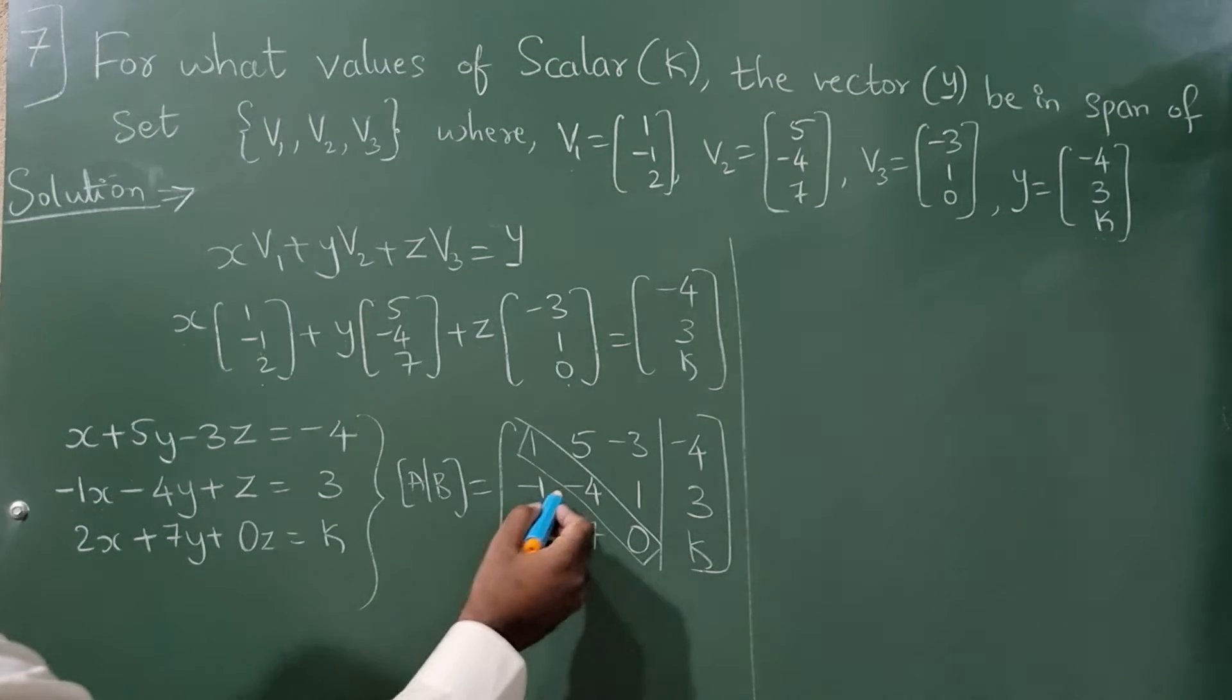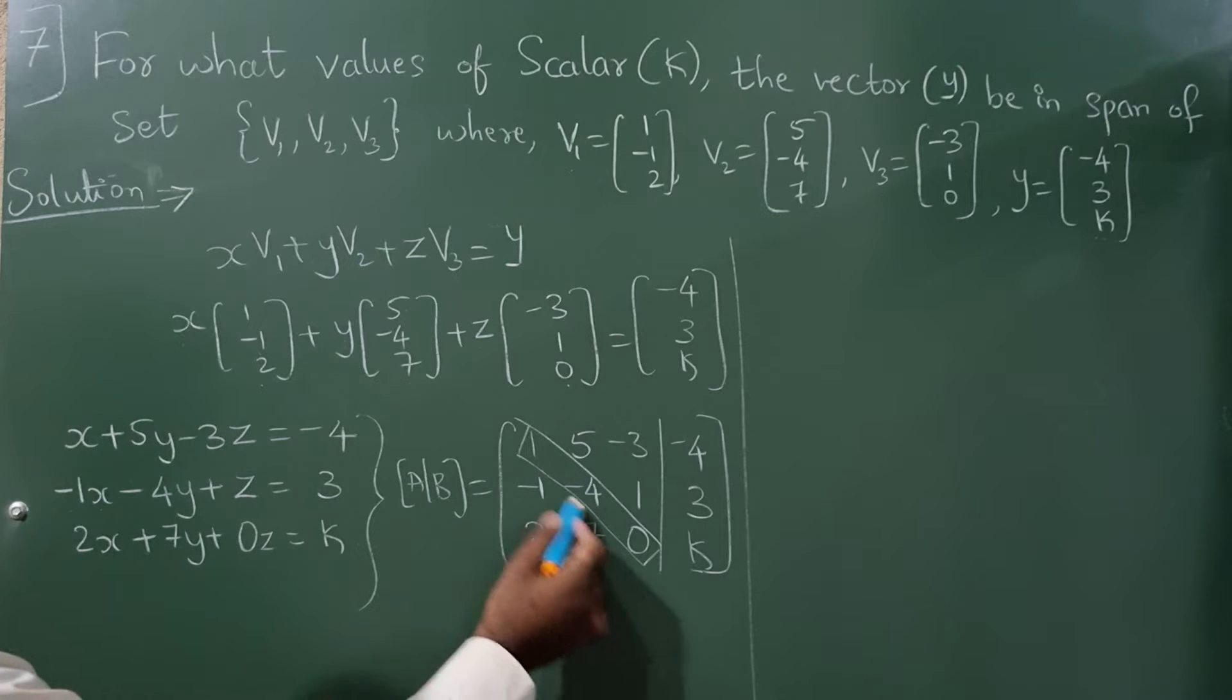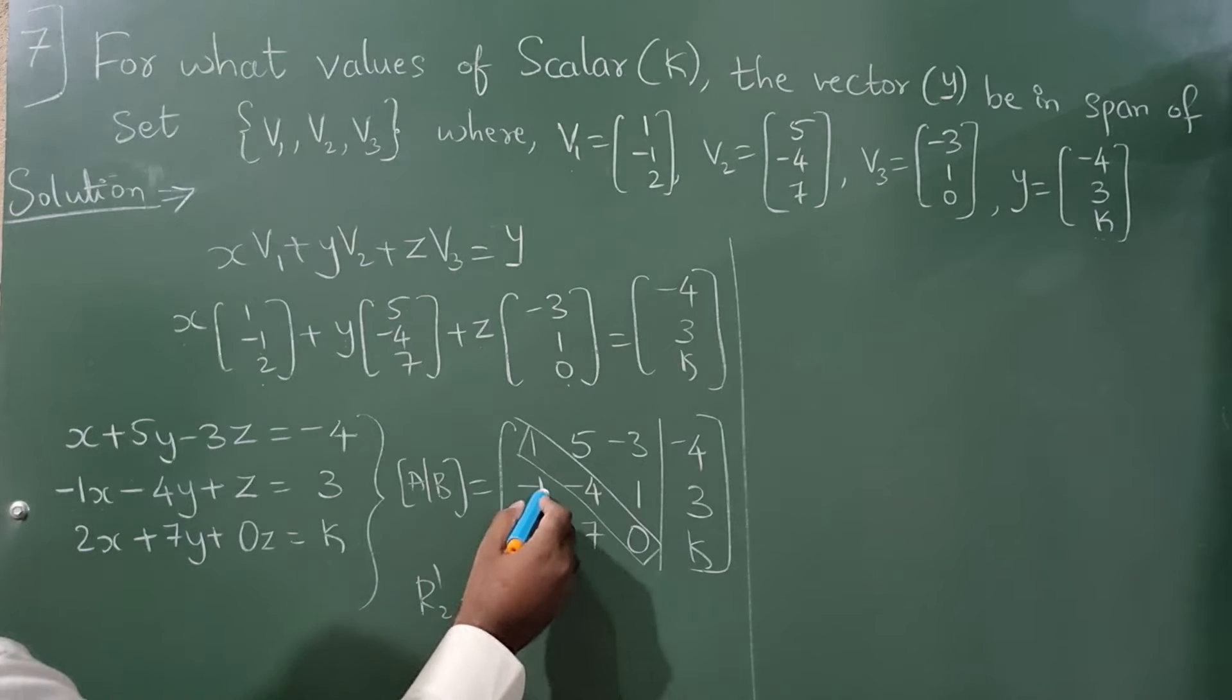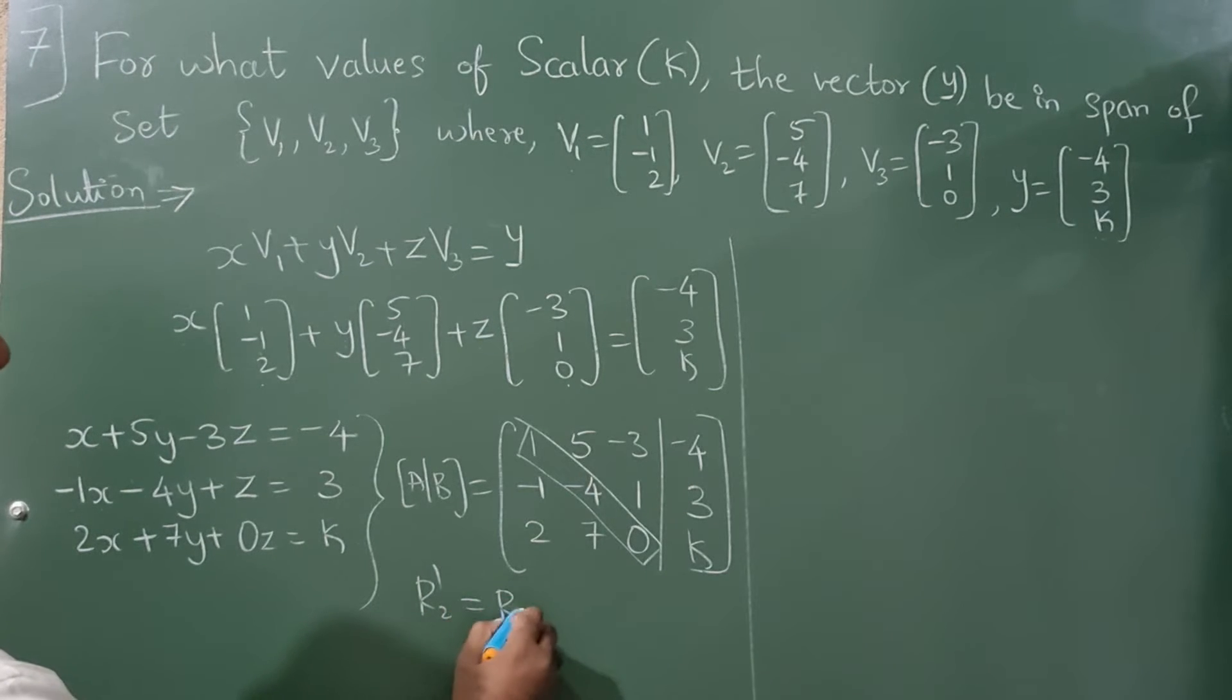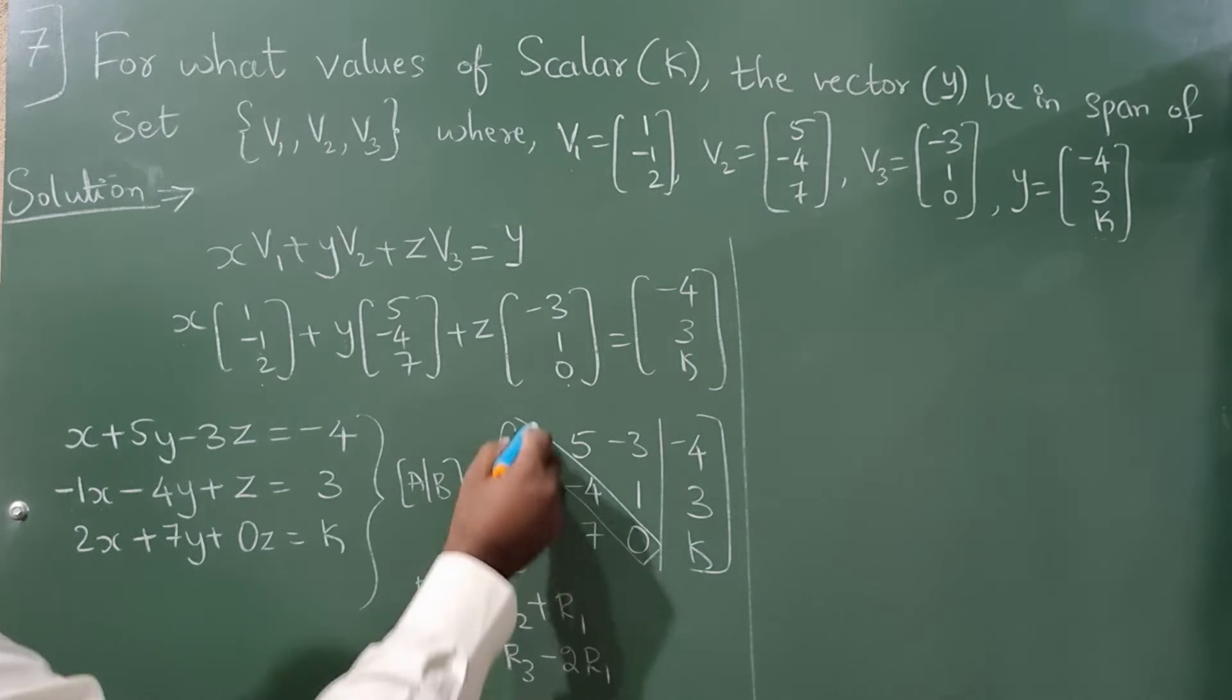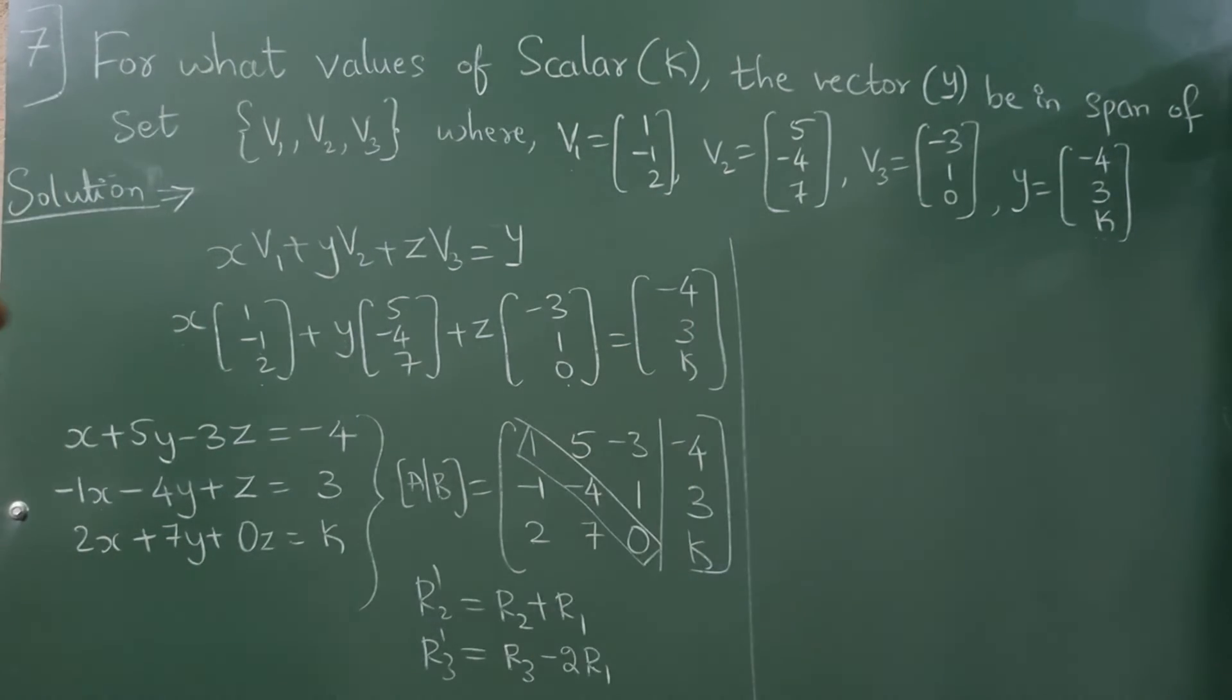As I have told in previous videos, these elements should be made 0. So to make it 0, this is row 2, so I'll write row R2 minus 1 plus 1, minus 1 plus 1 will become 0. Next is R3, so R3 minus 2 into R1 will become 0. Substituting this.